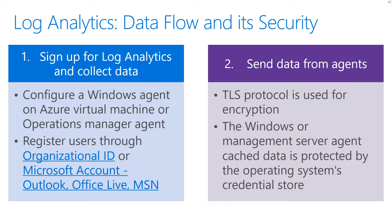You create workspaces based on data center region. Each workspace is replicated to other data centers in the region, primarily for Log Analytics service availability. All communication between connected systems and the Log Analytics service is encrypted; the TLS protocol is used for encryption. You register all agent types with an enrollment key and a secure connection is established between the agent and the Log Analytics service using certificate-based authentication and SSL with port 443.